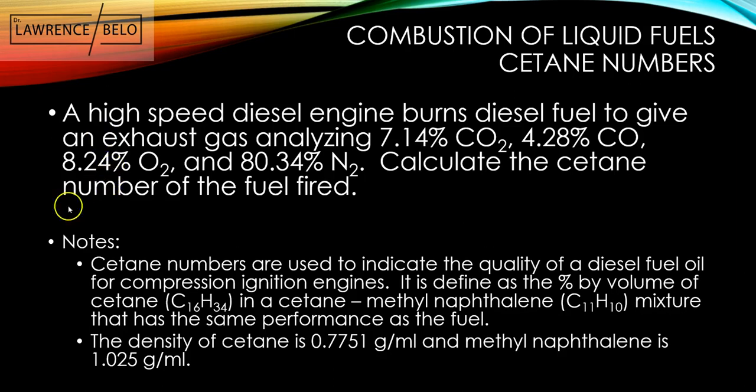So what are cetane numbers? Cetane numbers are used to indicate the quality of a diesel fuel oil for compression ignition engines. It is defined as the percentage by volume of cetane C16H34 in a cetane methyl naphthalene C11H10 mixture that has the same performance as the fuel. Also given is that the density of cetane is 0.7751 gram per ml and that of methyl naphthalene is 1.025 gram per ml.